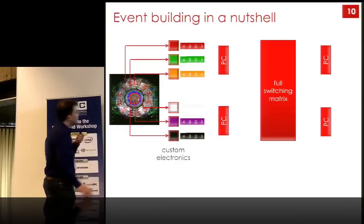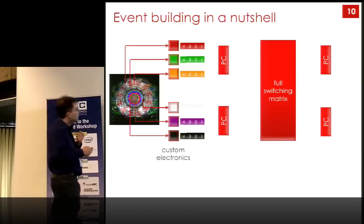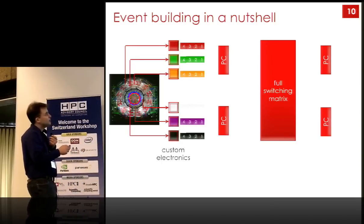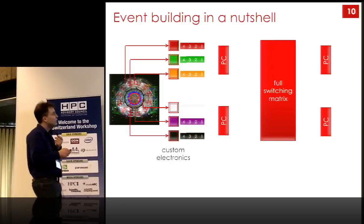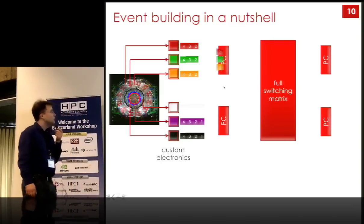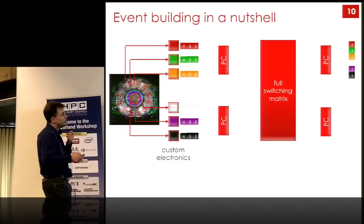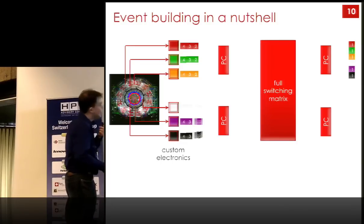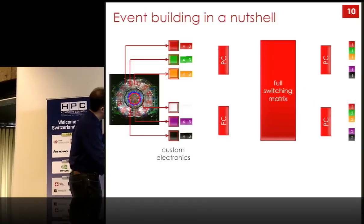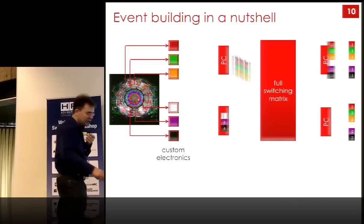Event building in a nutshell: different parts of the detector produce data stored in buffers, corresponding to what we call fragments — pieces of data typically about two to four kilobytes each — which are then assembled. There is a first layer of aggregation, then data passes through a full switching matrix for full event building on the second layer. Data doesn't necessarily arrive at the same time over all links, so synchronisation is needed. Things are also pipelined — we don't have to wait for the first event to be fully built before the next can be sent.